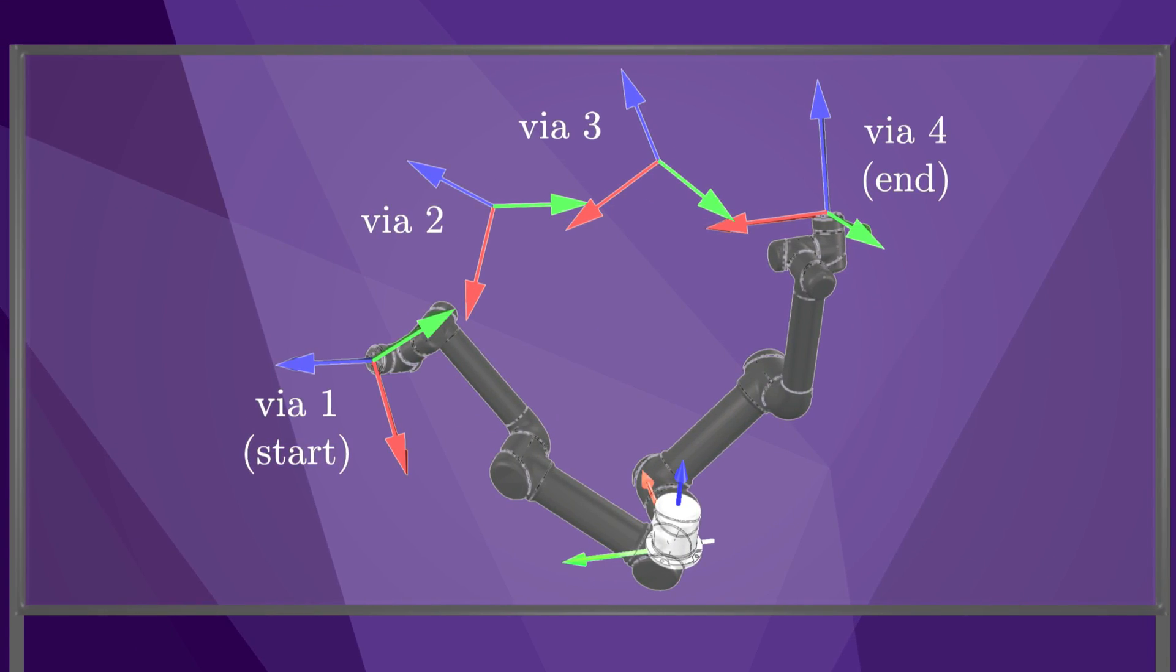We could specify a set of configurations through which we would like the robot to transit. These configurations are called via points. We also specify the times at which the robot should achieve each of these via points. We then solve for a smooth trajectory that passes through the via points at the specified times. The choice of the via points and times allows us to shape the path and trajectory.